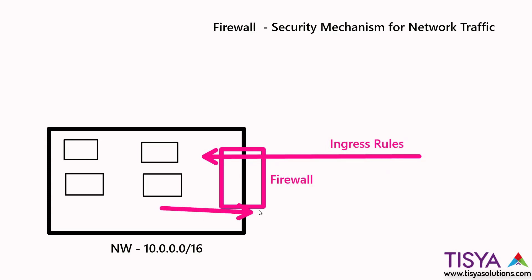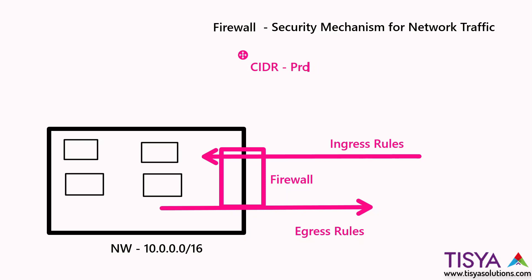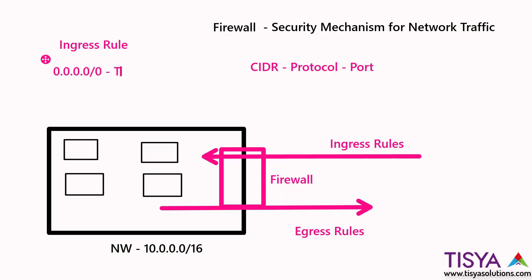We can also configure what traffic is allowed to go out in the form of egress rules. When you configure these security rules, you basically specify a CIDR, protocol, and port. For example, I might have an ingress rule which will allow from 0.0.0.0/0 on TCP port 80. If I am hosting a public-facing web server with a public IP on a computer placed inside this network, with this ingress rule I will allow from any IP address — that is the meaning of 0.0.0.0/0 — on TCP protocol, port 80 is open, which means only port 80 can be reached.